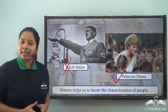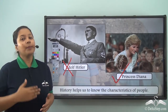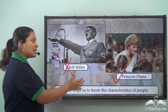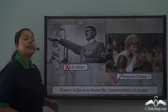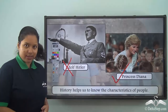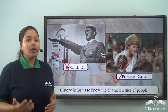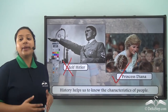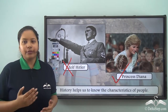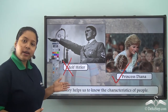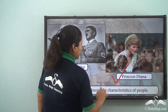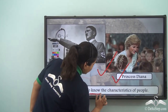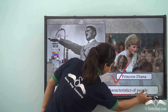In the previous example, a person learnt from his own mistake. But here we have learnt the characteristics from the mistakes of others. This is how history teaches us — we can see how all of us can learn from the mistakes of Adolf Hitler and from the good qualities of Princess Diana. So history helps us to know the characteristics of people.